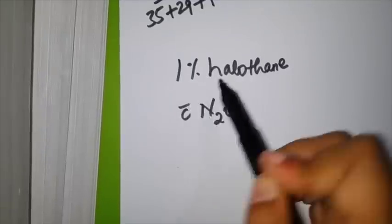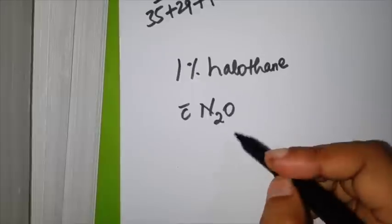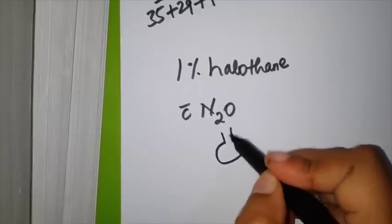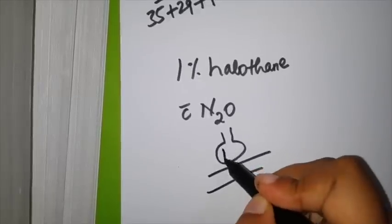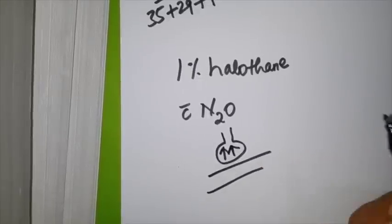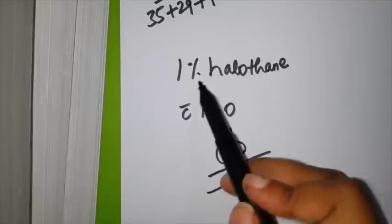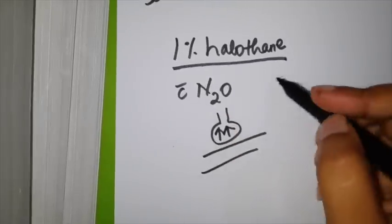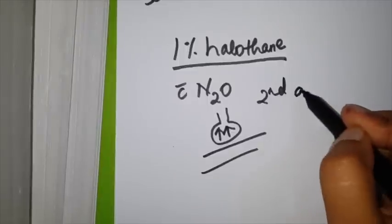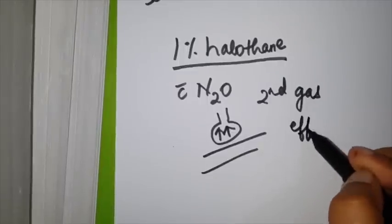Nitrous oxide, apart from concentrating itself, also increases the concentration of another add-on anesthetic gas that is added along with it. This is called second gas effect.